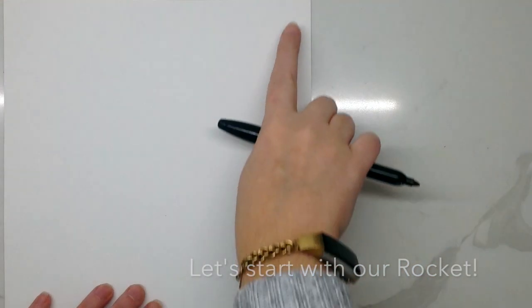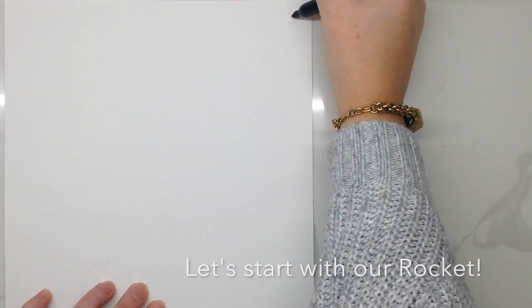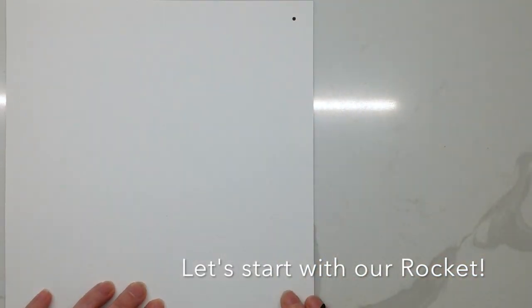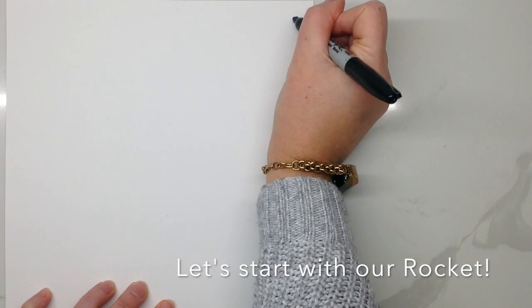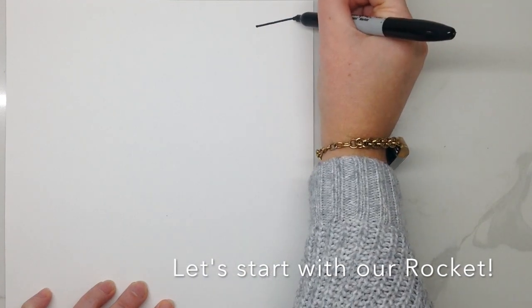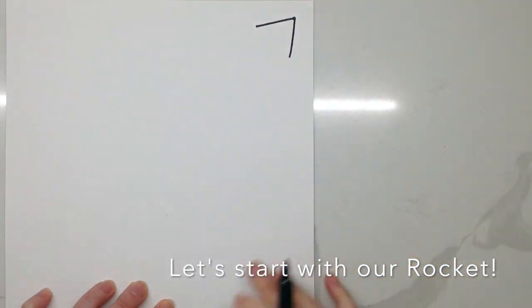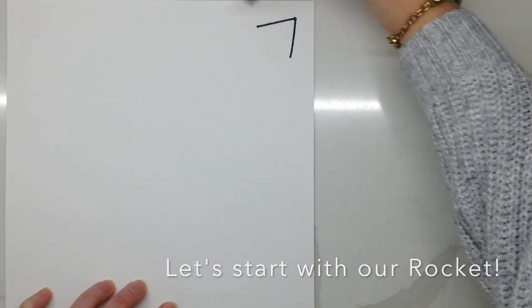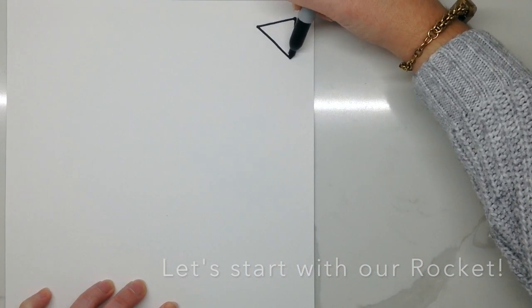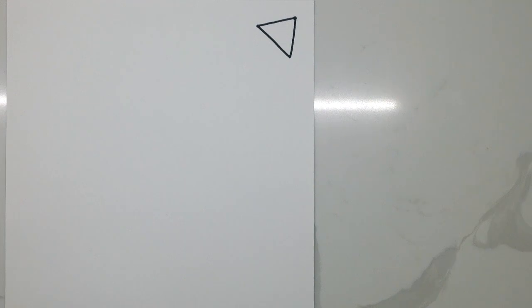Let's start with our rocket. We're going to begin by adding a dot towards the top corner of our paper. From this dot, you're going to use two straight lines that come down and out to begin creating a triangle. Connect your two sides with a flat bottom to finish your triangle.